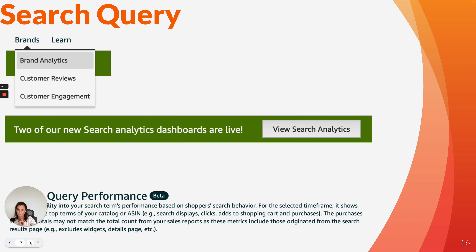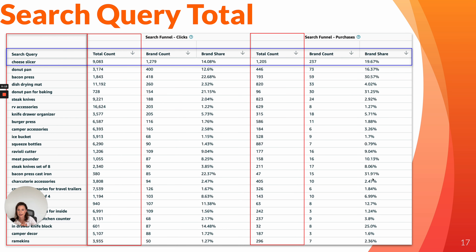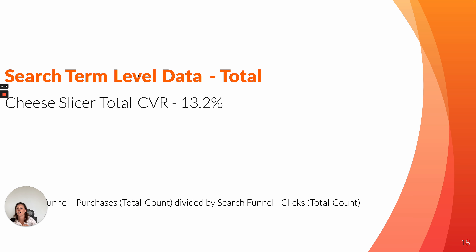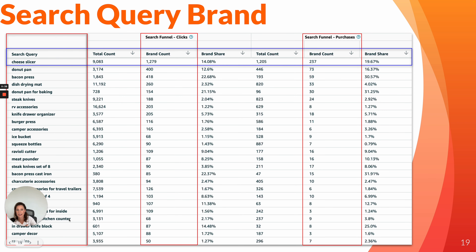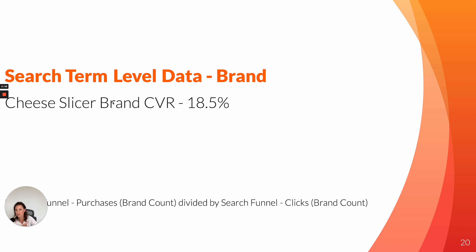Moving on to Search Query — I pulled the exact same data and the first thing I want to see is how is my category converting for this search term. What I did is total count purchases divided by total count clicks, and I can see that on the search term level the category average is 13.2 percent. Then I take that exact same data and look at it on the brand count — so how is my brand converting? Same calculation: purchases divided by clicks. I can see that for the search term 'cheese slicer' my conversion rate is 18.5 percent, again much higher than the category.